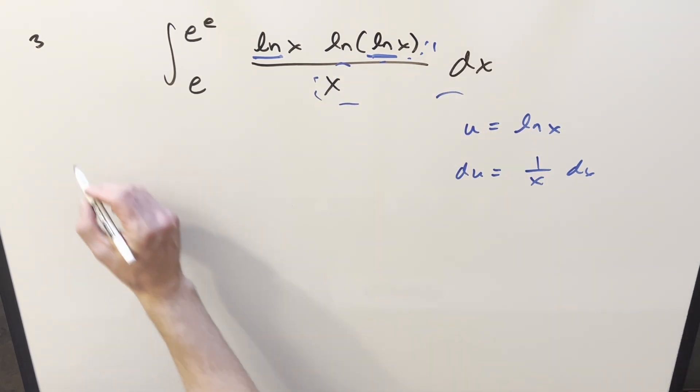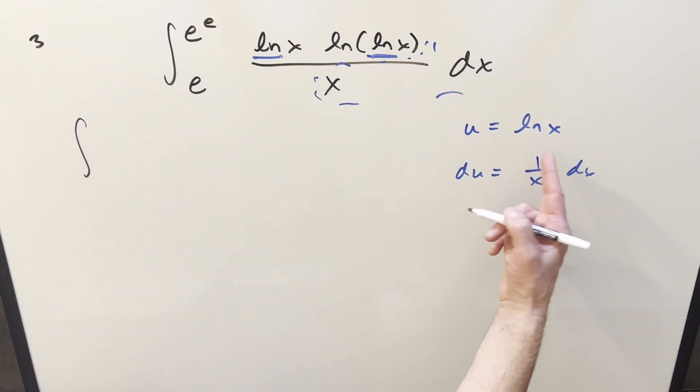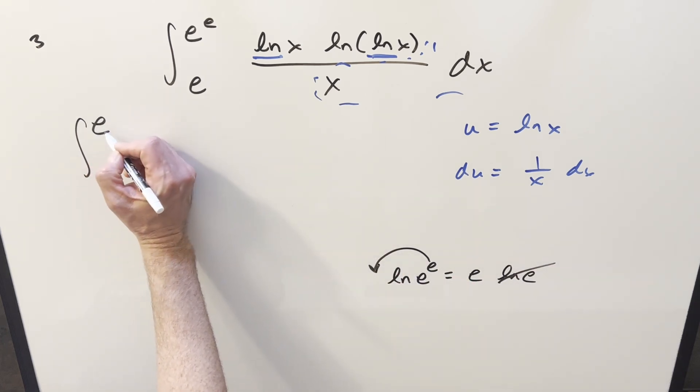So we'll go ahead and substitute, updating the bounds, but all this e to the e stuff, it's going to work nice with ln x. So you plug in e^e here and we get natural log e^e. Log properties, we can bring that out front and we get e, ln e. But this thing's just 1, so the upper bound becomes e.